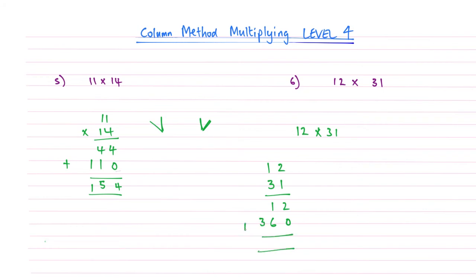And then we're going to add those two together. So 2 add nothing is 2, 1 add 6 is 7, and then 3 add nothing. And if you remember from column method addition playlist, you can put a 0 there if you want. So 0 add 3 becomes 3, which gives me my answer of 372.